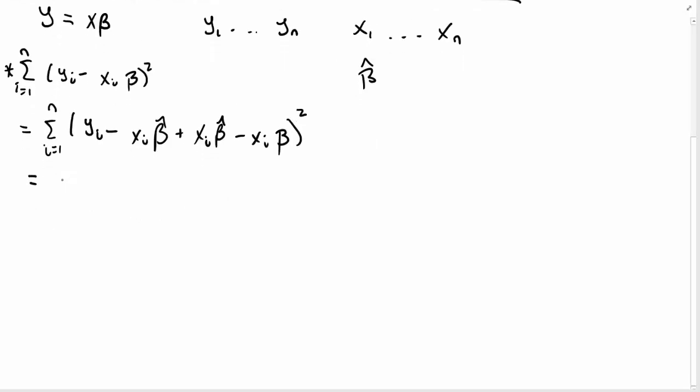I can expand this square, summation i equal 1 to n, yi minus xi beta hat squared, and I'm going to distribute my sum.